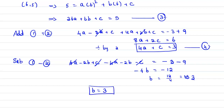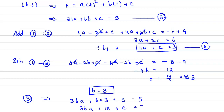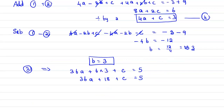Substitute b = 3 into equation 3: 36a + 6(3) + c = 5, which implies 36a + 18 + c = 5. Bringing the constant to the right side gives 36a + c = 5 - 18 = -13. This is equation 5.